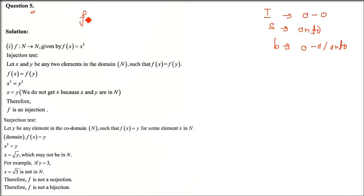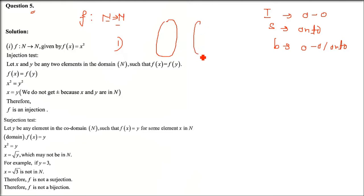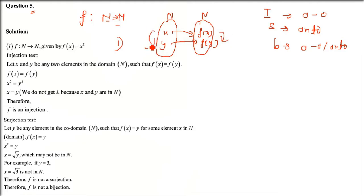For the first function, the most important thing is the domain and codomain - both are natural numbers. To check injection, if we have two sets of natural numbers and take x and y, then if f(x) equals f(y), then x and y must be equal. This is the definition of one-to-one.